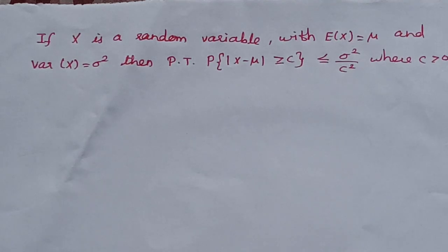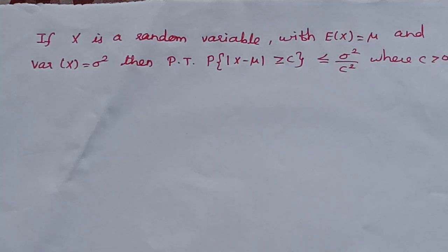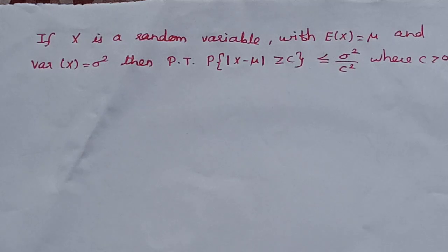Hello everyone. In Mathematical Statistics 1, there is a university exam question. If X is a random variable with expectation of X equal to mu (mean mu) and variance of X equal to sigma square, then prove that probability of modulus of X minus mu greater than or equal to c is less than or equal to sigma square by c square, where c is positive, greater than 0.